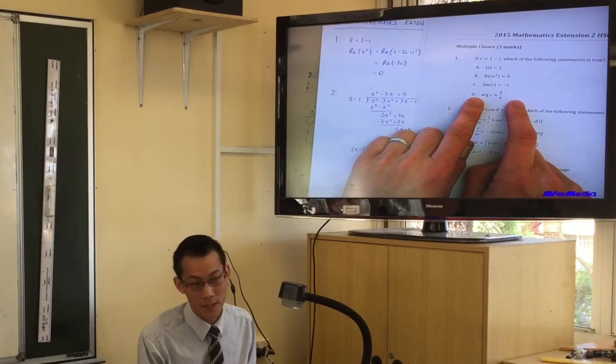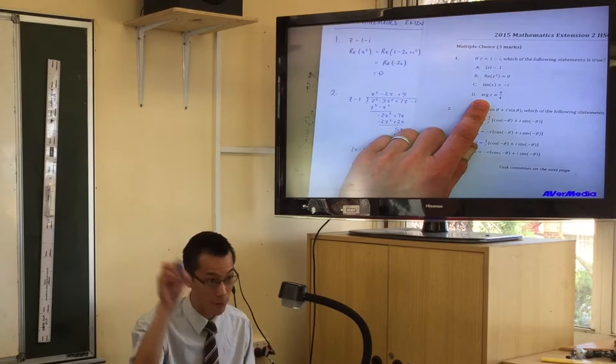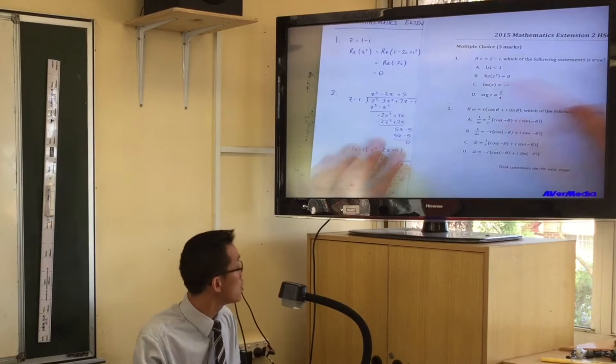Arg z is not pi over 4. Well, where is it? It's 1 minus i, it's minus pi over 4. So then that brings you back to B, which is a bit weird, admittedly, but you can see my solution here.